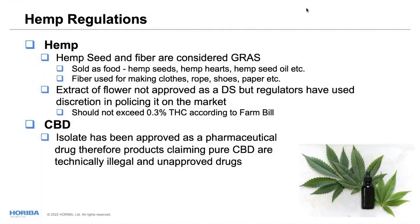Hemp has been in the industry for a while. Hemp seeds and fiber are considered GRAS — generally recognized as safe — and you see them in health food stores. However, the flower was considered a Schedule I substance like marijuana until the Farm Bill of 2018, which differentiated hemp as containing equal to or less than 0.3% THC. Hemp flower is not psychoactive, so this distinction makes sense.